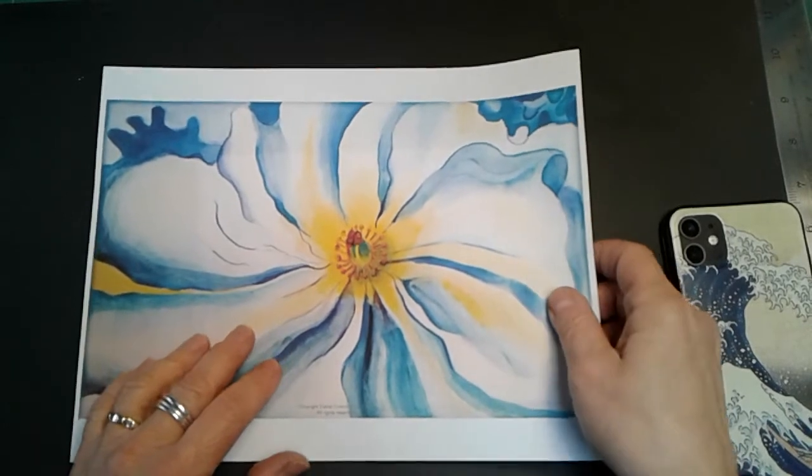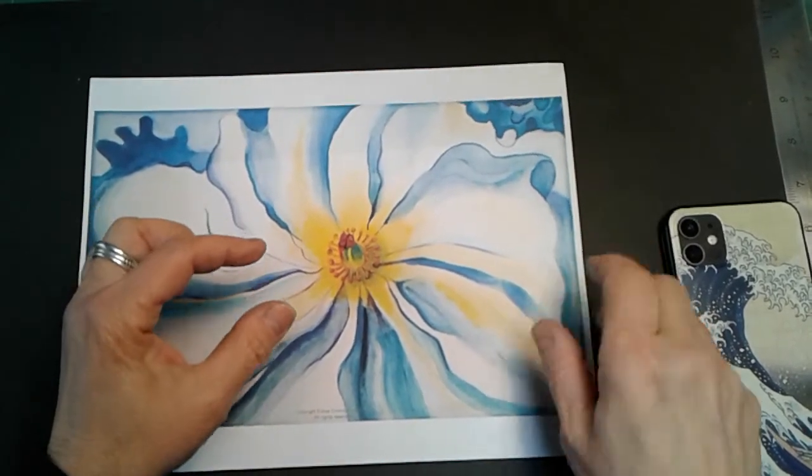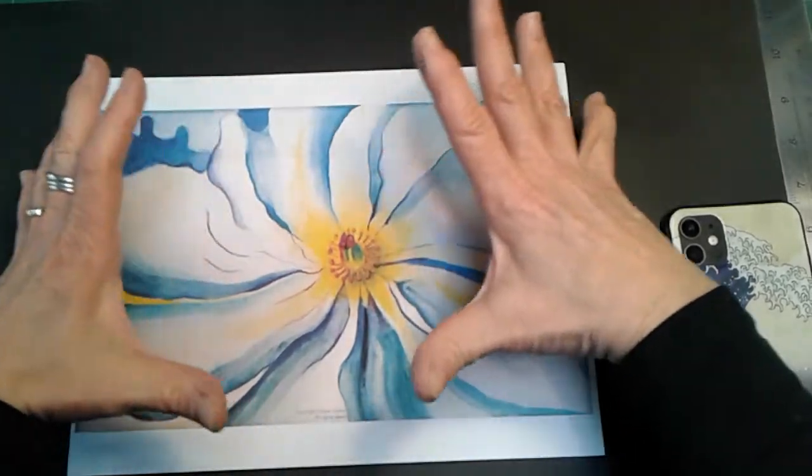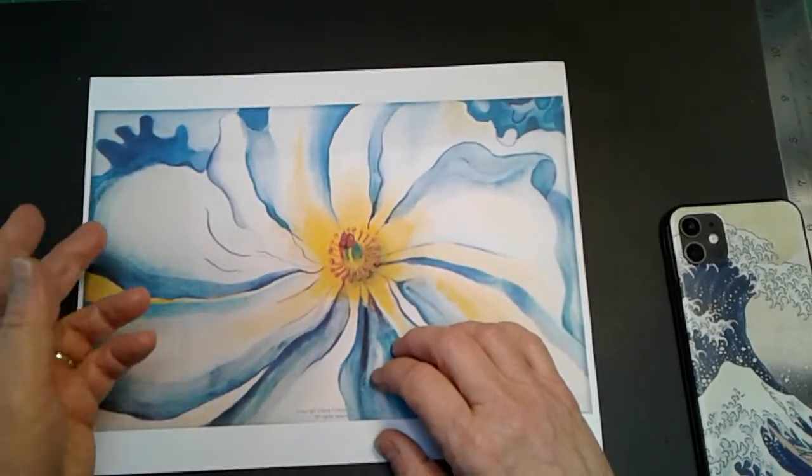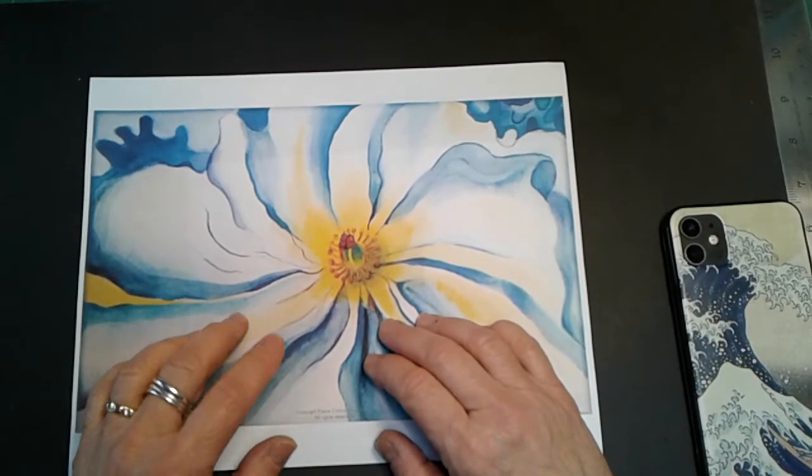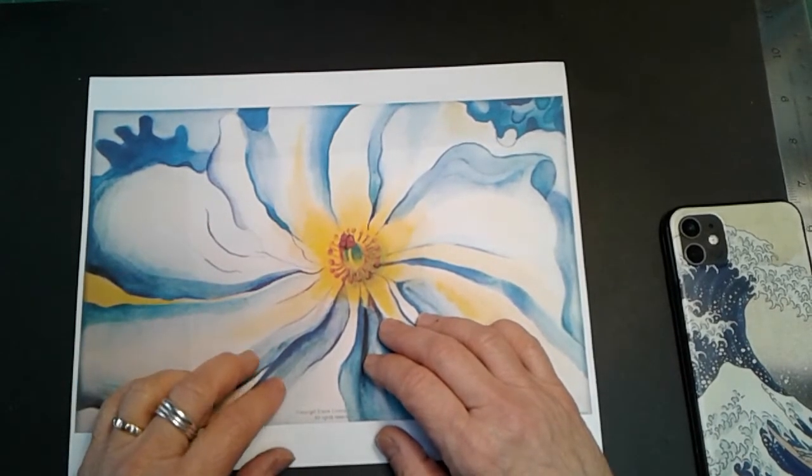She was talking about taking a tiny object like a flower and making it huge so that you have to notice it, which brings us back to the principle of emphasis, the word we discussed last week.